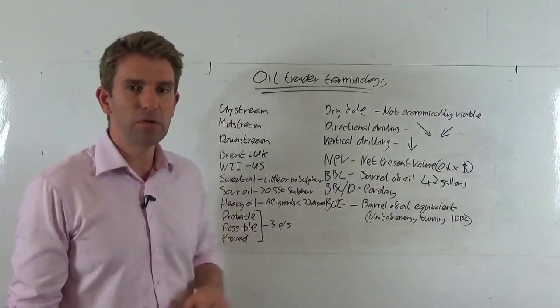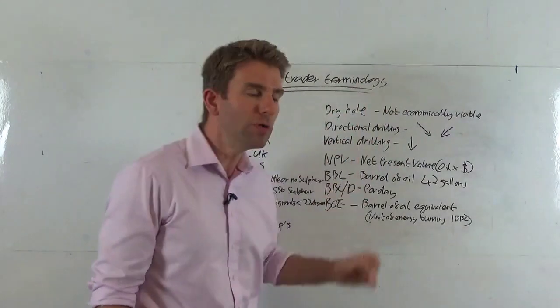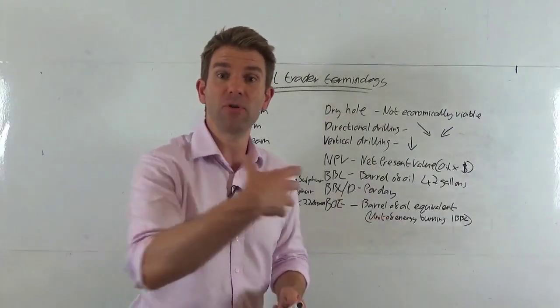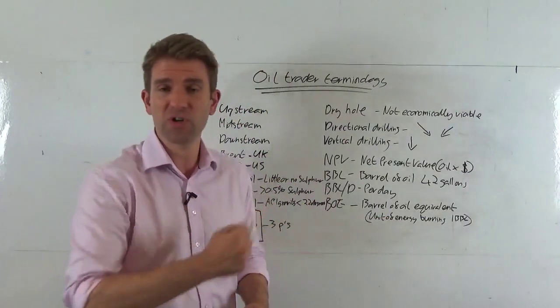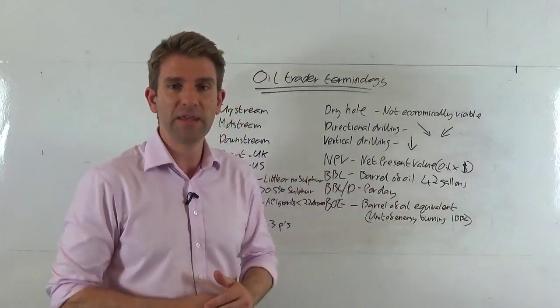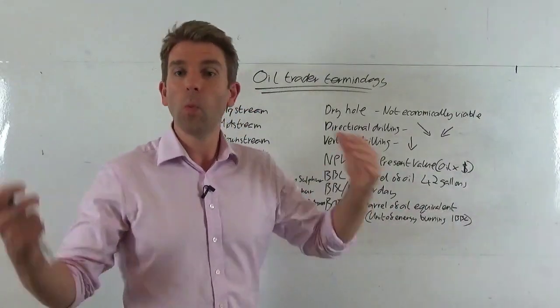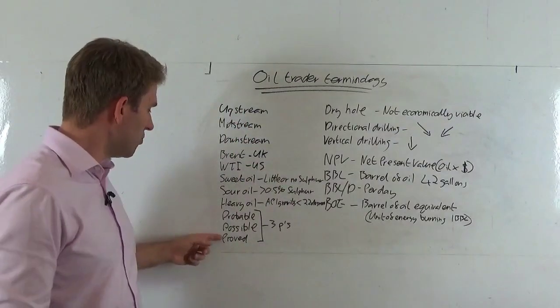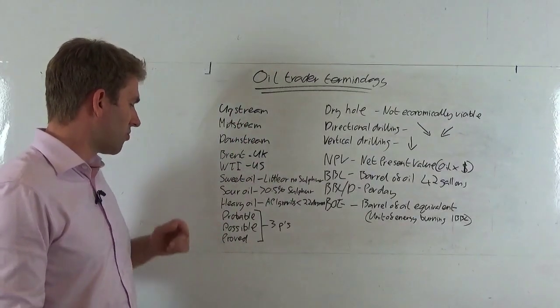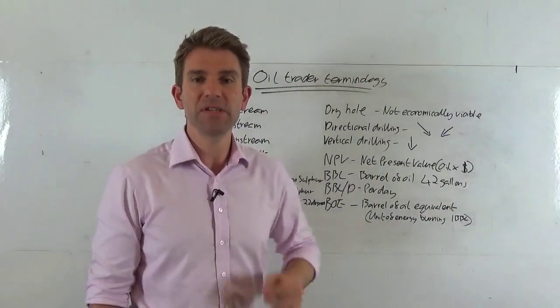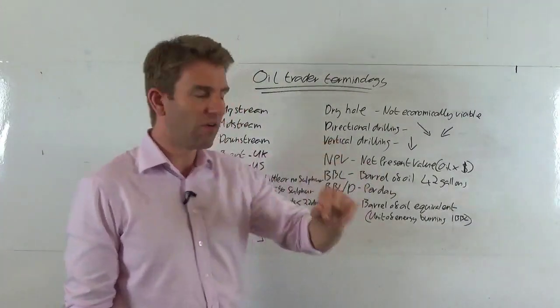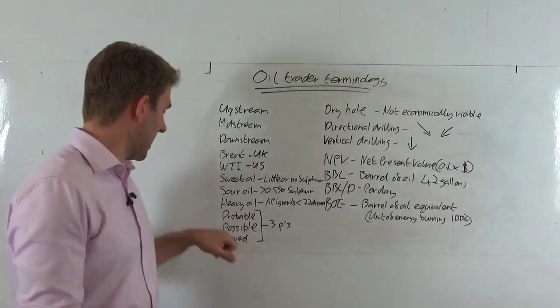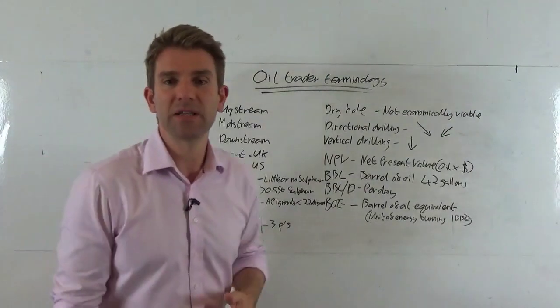Moving on to the exploration side of things. If an oil explorer goes out, maybe you're investing in an oil exploration company, you're reading the well report. Three P's of exploration: you've got proved, probable, and possible. Proved is a 90% probability of being able to extract commercially viable oil. Probable is 50% and possible is 10%. Those are the benchmarks that help you make a decision as an investor or trader.